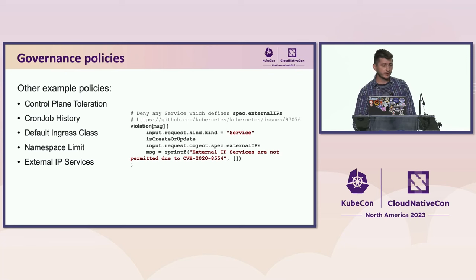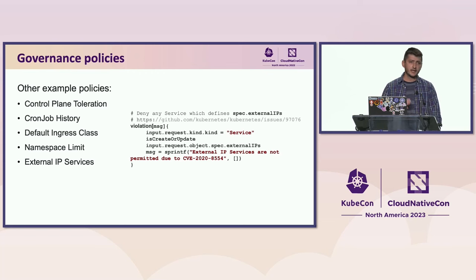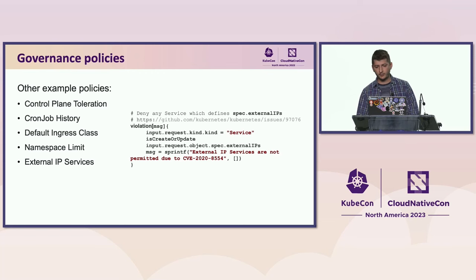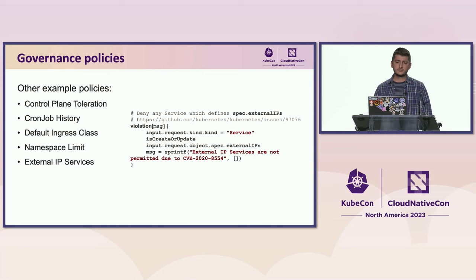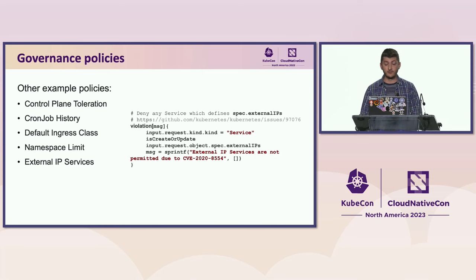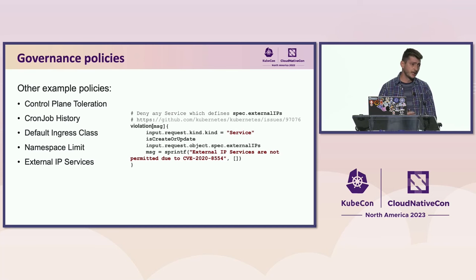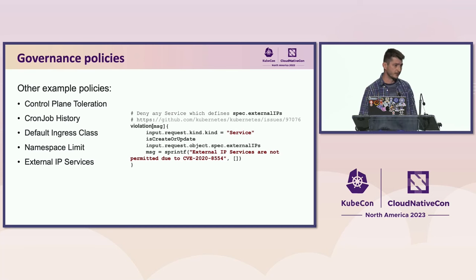One thing to keep in mind is that Gatekeeper, like any other validation or mutation webhook, adds latency to any API request it mutates or validates — simply because of the extra processing time needed. So the more policies we define, the higher the API response latency might be.